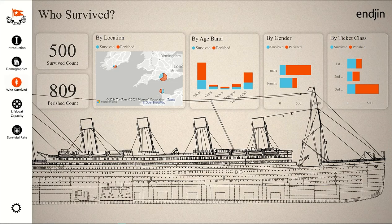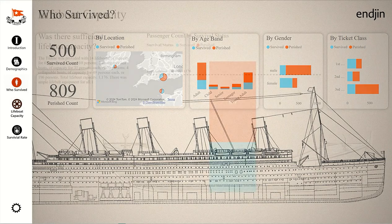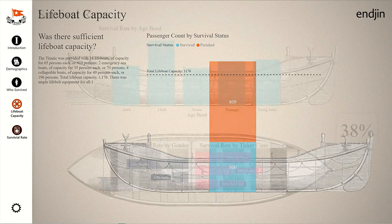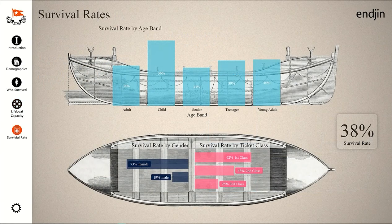On the left we have introduced navigation as a way of progressing through the data story, taking you through an introduction, the demographics of the people that travelled on the Titanic, who survived, and the survival rate. Adding navigation is a good way of identifying different topics within one subject. It's a way of breaking into separate topics that build into one data story.